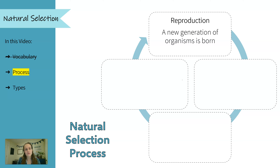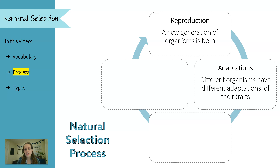The first step is reproduction. We start with a new generation of organisms being born in the particular environment that they're in. These organisms have different adaptations of their traits. If we think about the traits being height, some might be taller or shorter. If we think about it as how long their legs are, it could be longer legs, medium sized legs, or shorter legs.